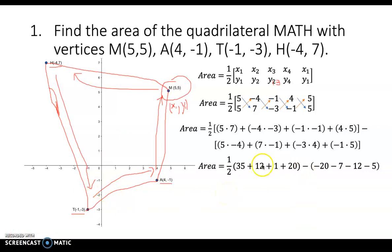Okay, getting the product, we will have one half. So actually there should be another part here. This one should have a bracket here. So 5 times 7, that's 35. Negative 4 times negative 3...